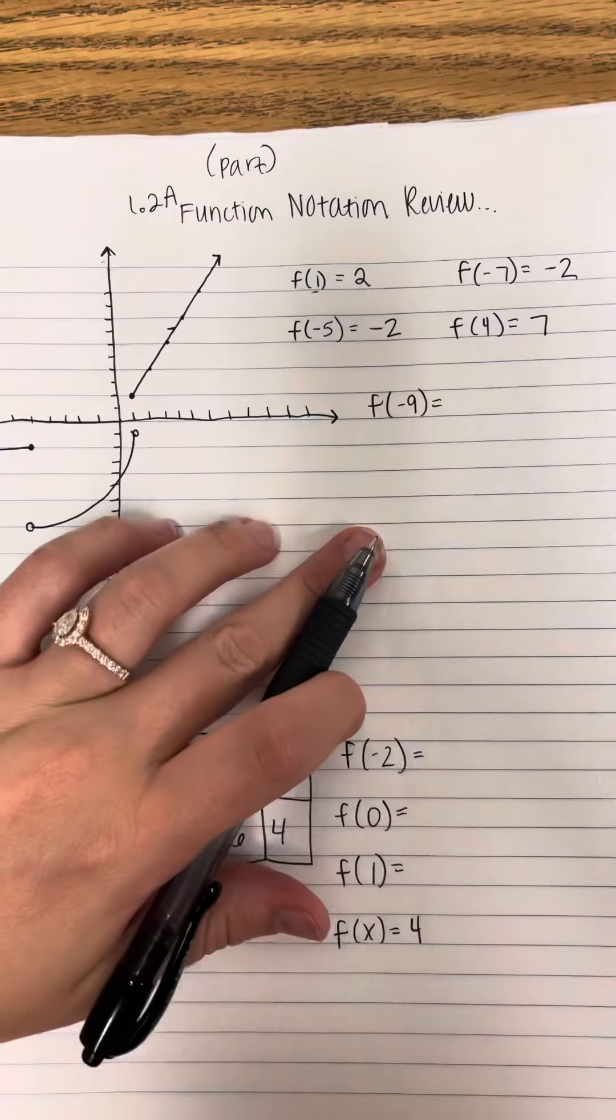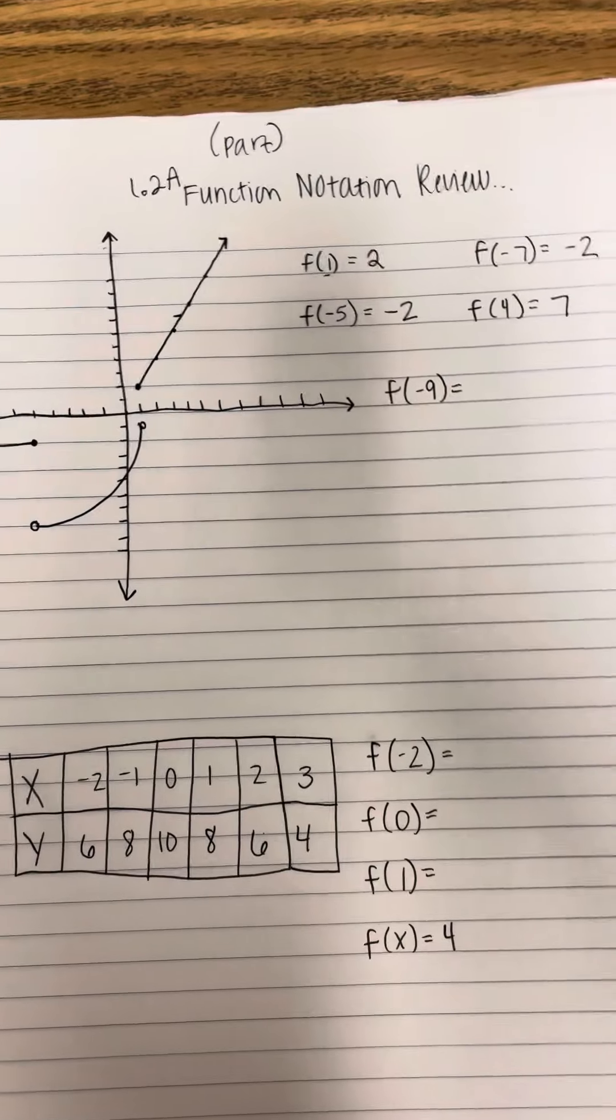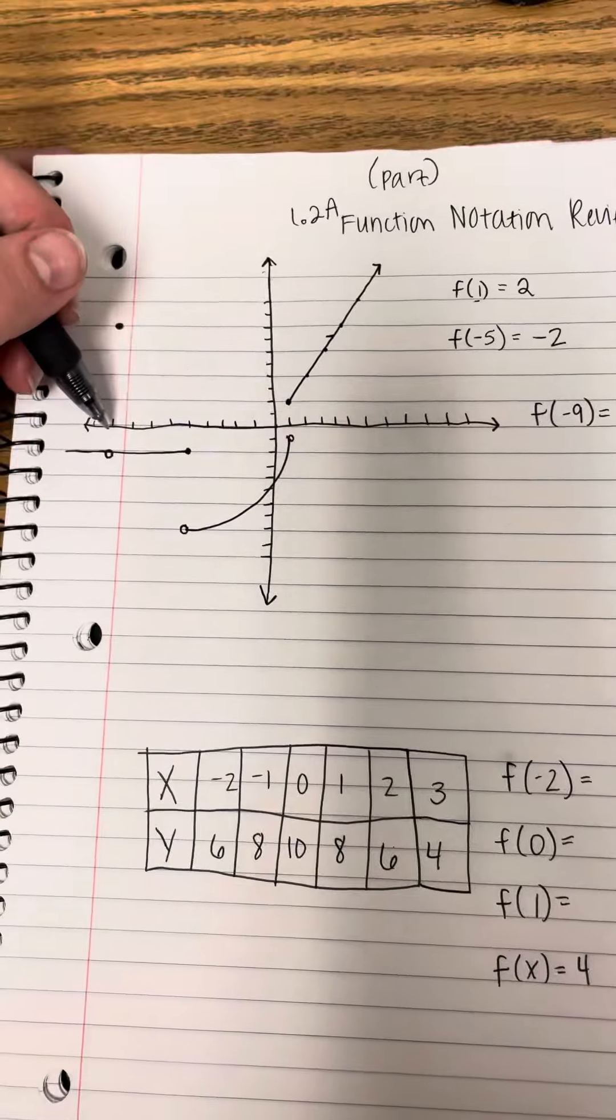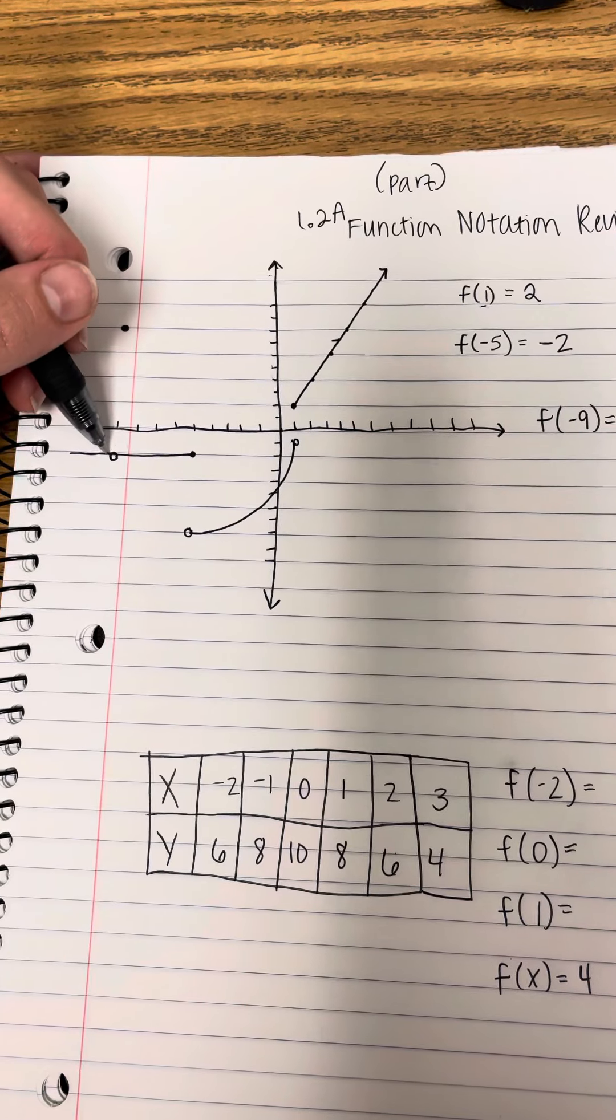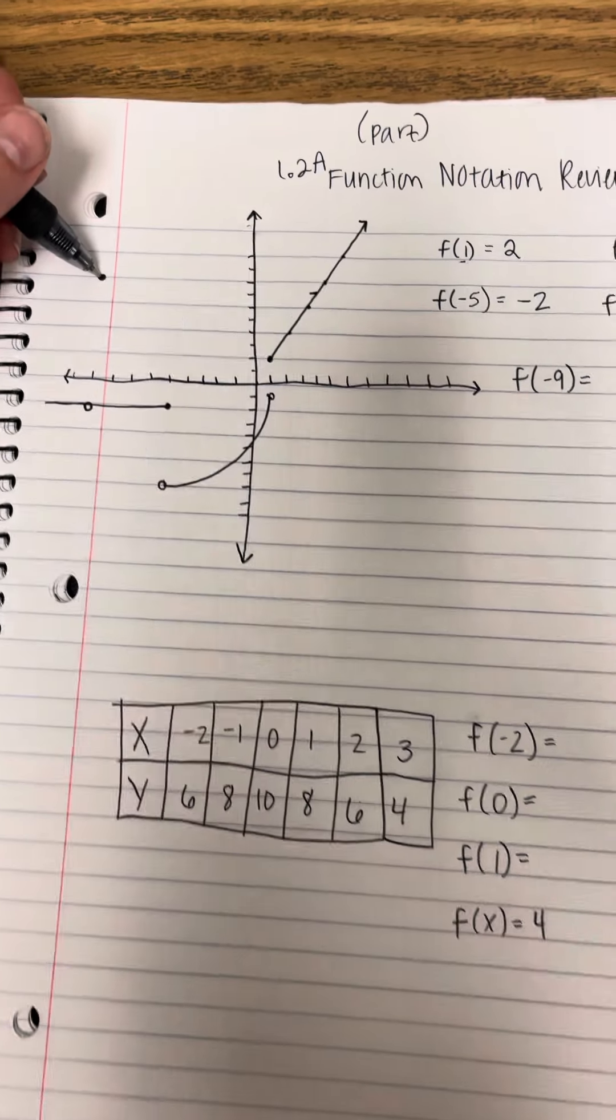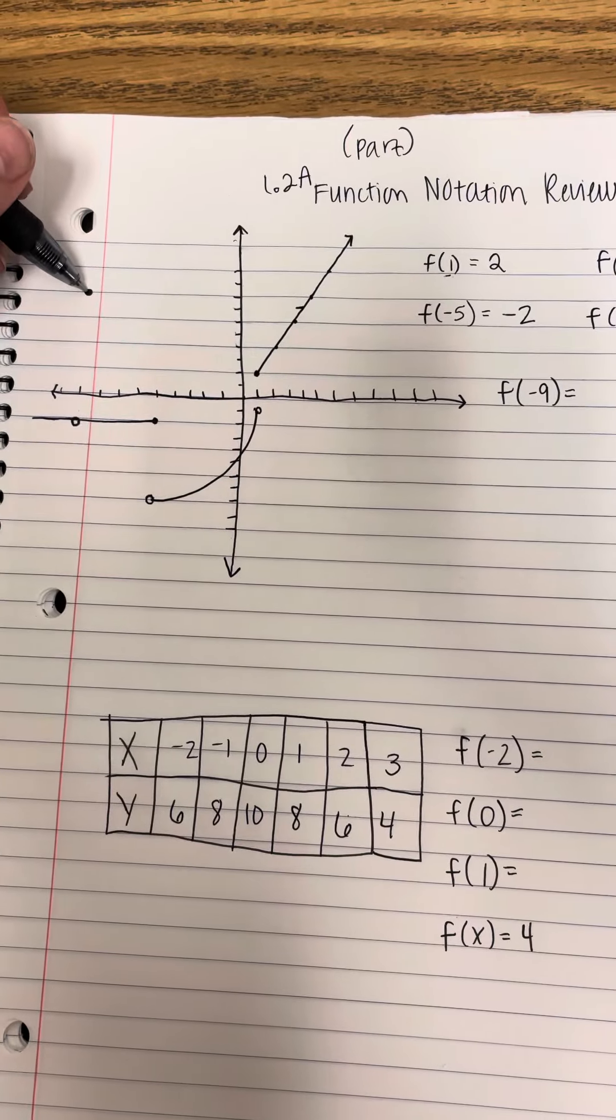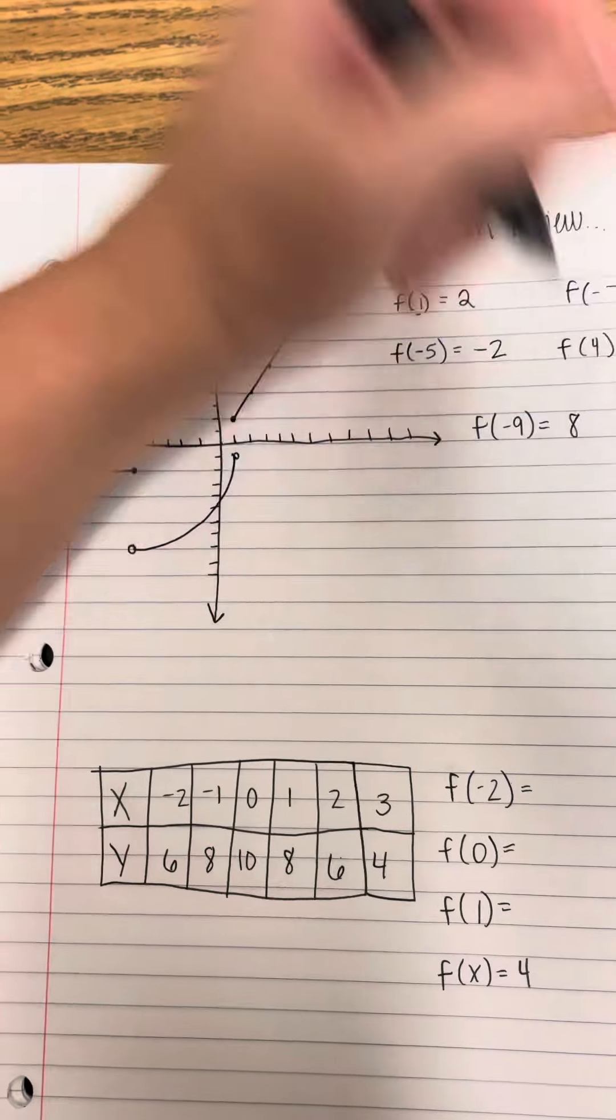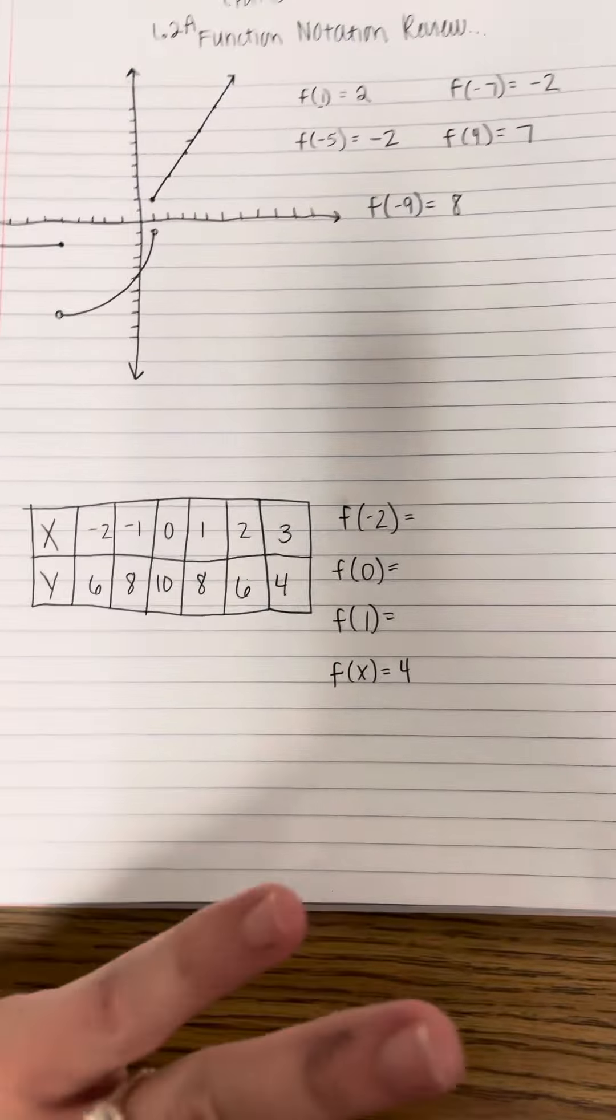All right. And then when x is negative 9, which is going to be over here, what is y? So it's not going to be negative 2 because we have that hole in the graph, but it's actually going to be this dot up here that is solid. And that's going to be 2, 4, 6, 8.